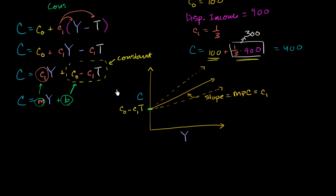YouTube user nilsor1337 asks a very interesting and good question: aren't taxes in some way a function of aggregate income? In most modern economies, people pay a percentage of their income, or in general, the tax base grows as aggregate income or as GDP grows. So is it appropriate to make this constant?